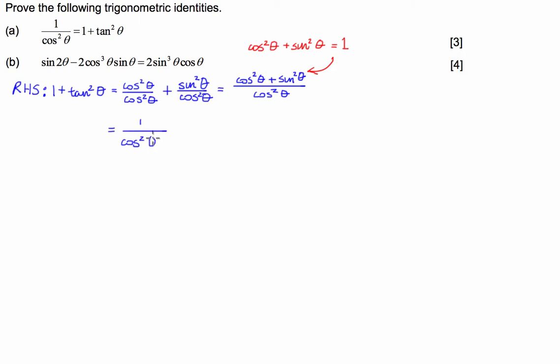I leave my denominator as it is, and you can see that this is now equal to the left hand side, and that's part A done.